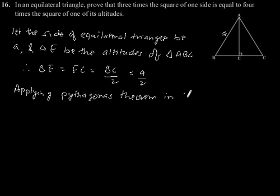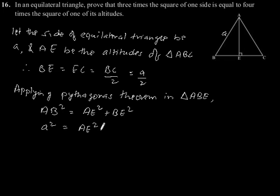In triangle ABE we will get AB square is equal to AE square plus BE square. So a square is equal to AE square plus BE, which is a by 2, so a by 2 square.